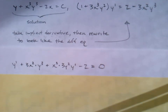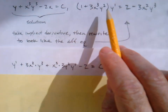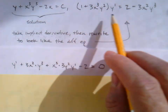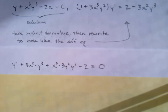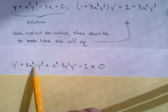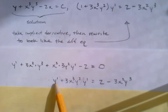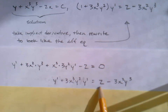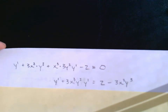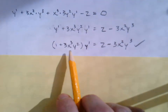We have our implicit derivative and we've done the hard work. Now it's just rearranging so it looks exactly like the target differential equation. Moving the 2 to the right side and subtracting the three x-squared Y-cubed term, we isolate the two parts involving Y prime on the left. We factor out Y prime, and now it looks exactly like the differential equation — verified.